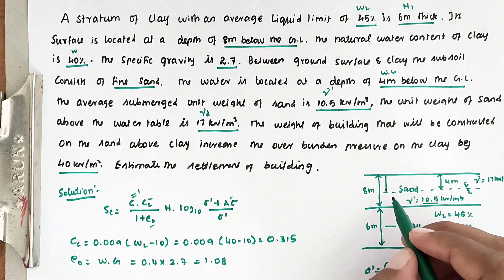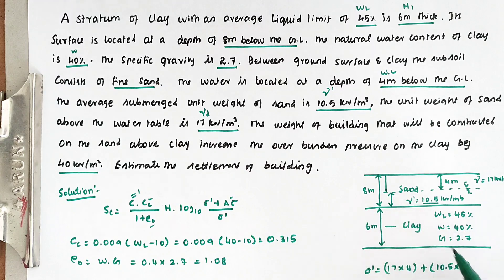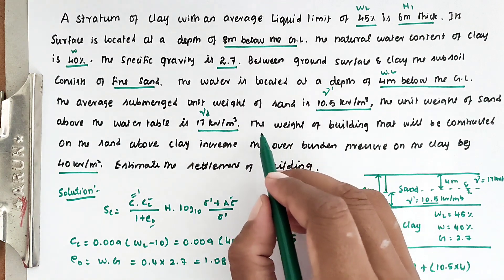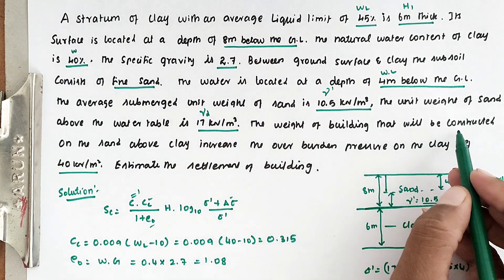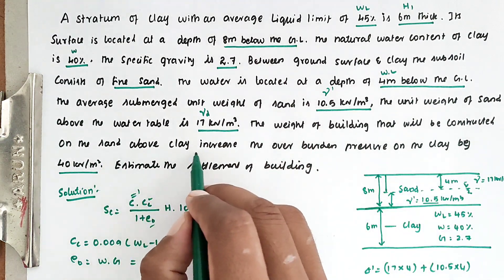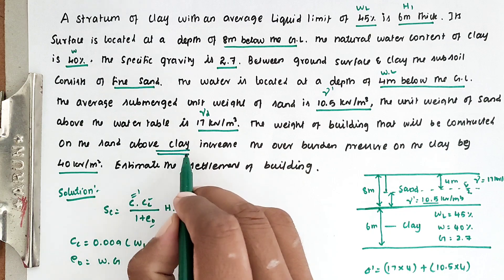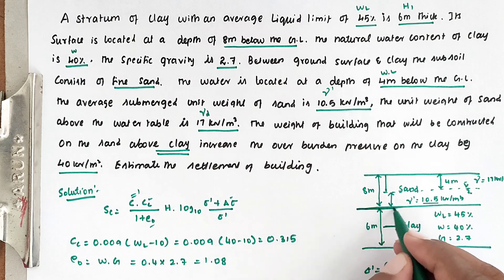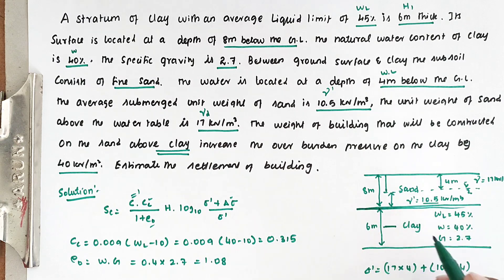That 10.5 is the submerged unit weight and this is a 4 meter depth. Now, in the question, the weight of the building is constructed on the sand above the clay, so we consider the pressure above the clay only — we do not take the middle of the layer. So sigma-dash equals 110 kN/m².